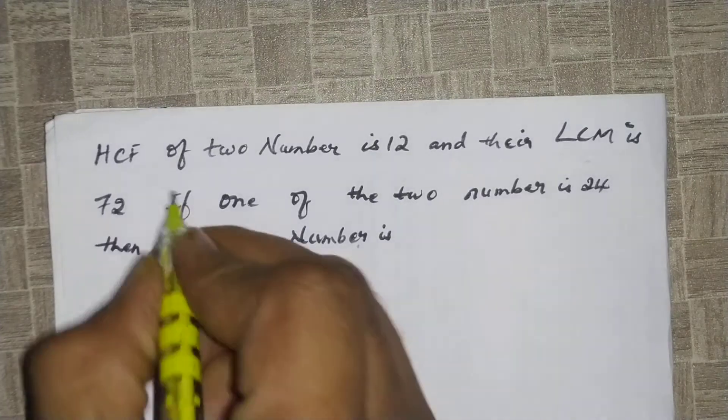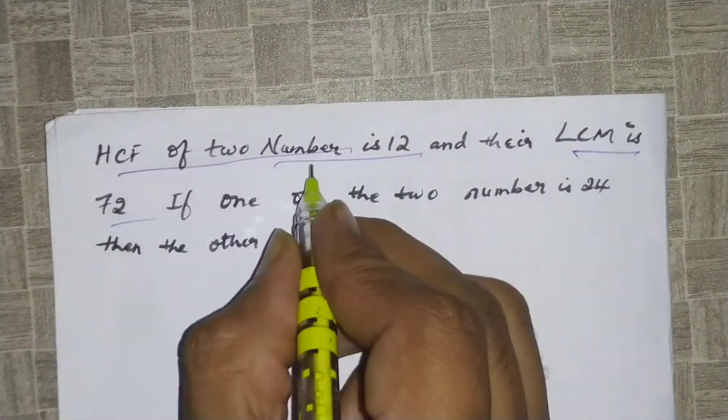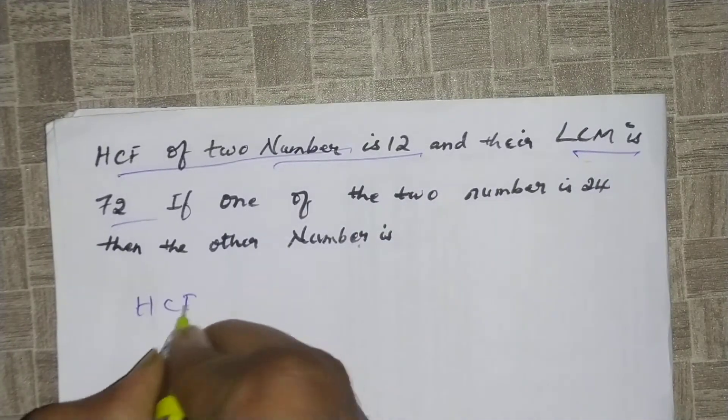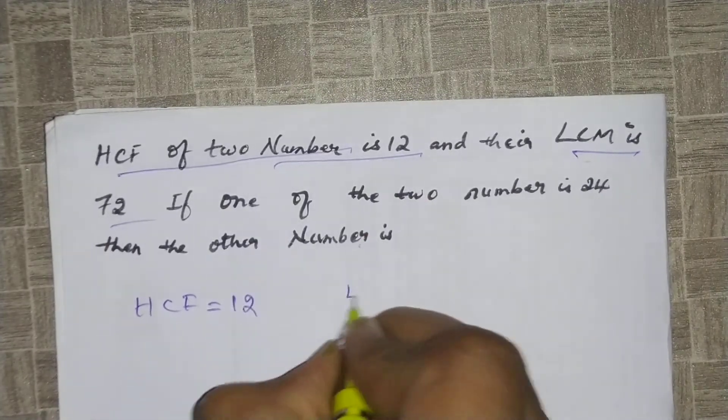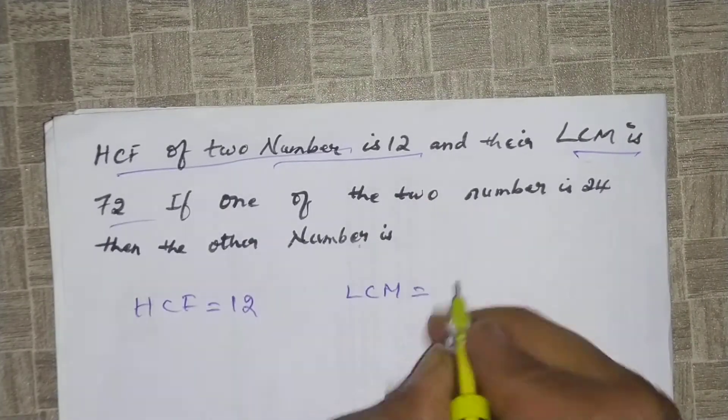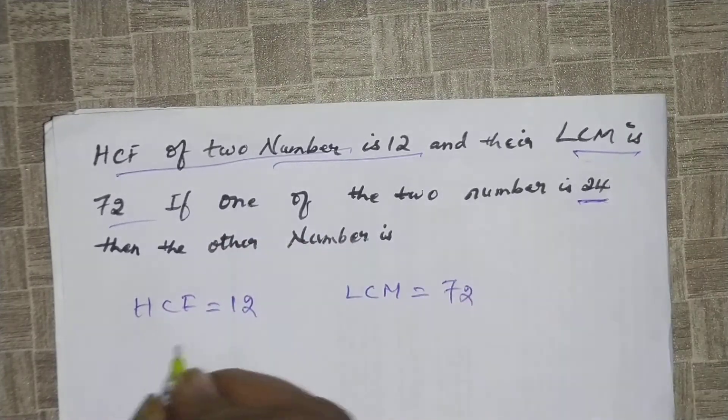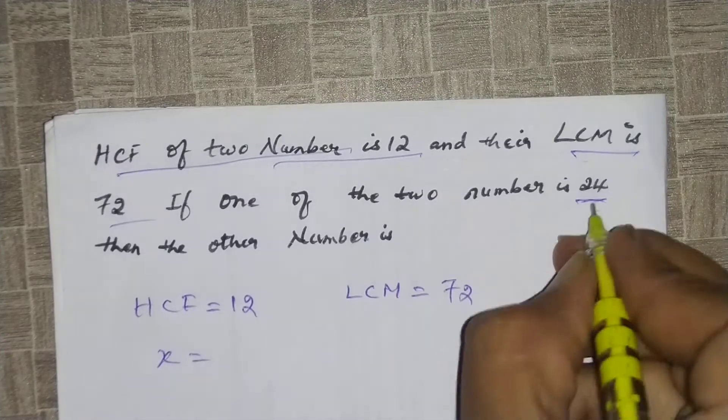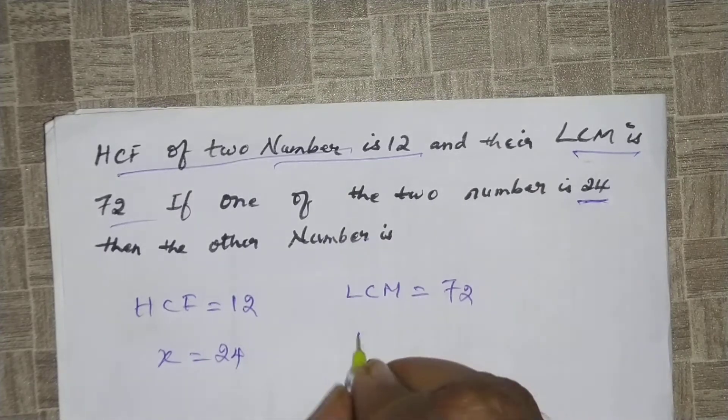First we have to write the HCF and LCM values. HCF of two numbers is 12 and their LCM is 72. HCF value is given as 12 and the LCM value is 72. If one of the two numbers is 24, we take one number as x equals 24.